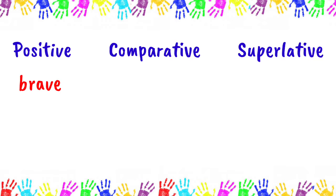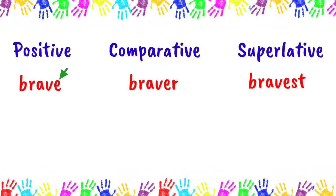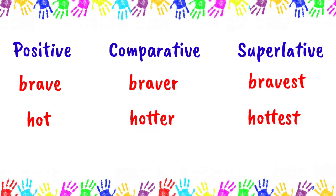Brave: braver, bravest. Since 'brave' ends in E, we had to drop the E before adding ER for its comparative degree and EST for its superlative degree. Hot: hotter, hottest. Take note that we doubled the consonant T before adding ER and EST because the letter before it is a vowel, which is O.